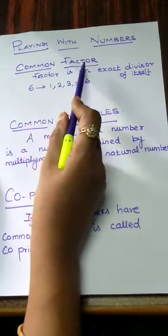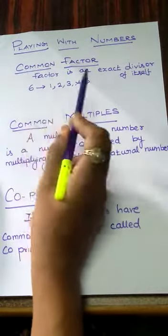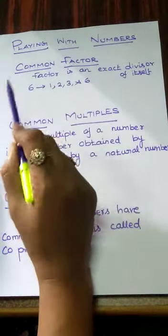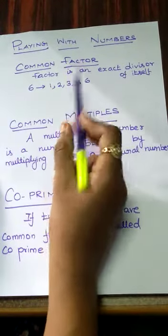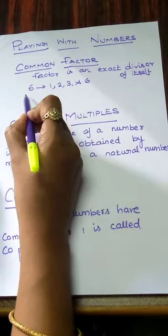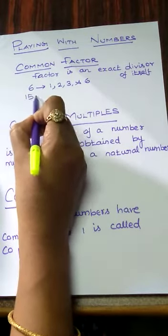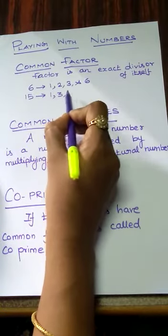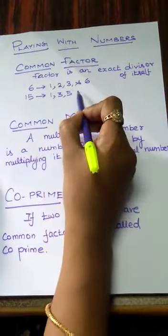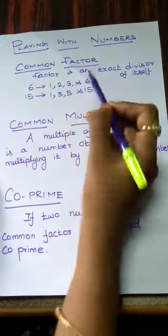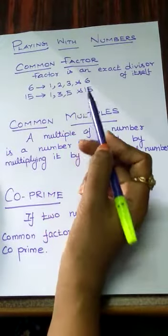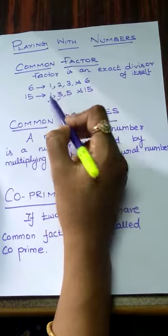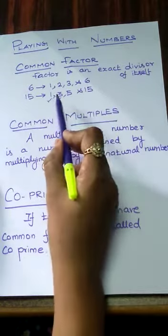What is a common factor? We have to select any two numbers, find the factors of each number, then select the common factors. Suppose we select the number 15. The divisors of 15 are 1, 3, 5, and 15. Now comparing with the factors of 6, the common factors are 1 and 3.